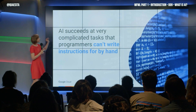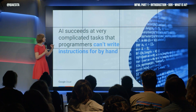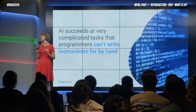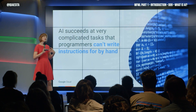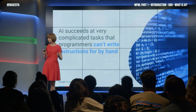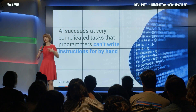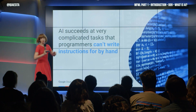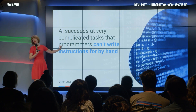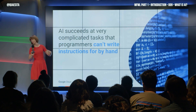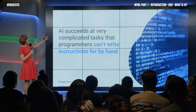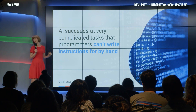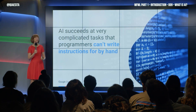You can't solve it the old way. AI, the way we think of it today, is about succeeding at those complicated tasks that programmers cannot write instructions for by hand. And you need super flexible algorithms — neural networks — and that is part of a class of stuff called deep learning. It's part of machine learning. And so when people say AI today, they tend to mean deep learning. That's the way that it's used.